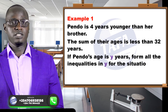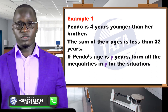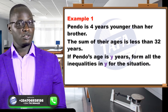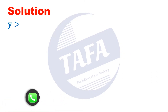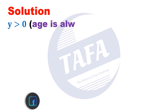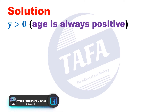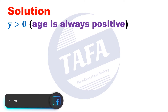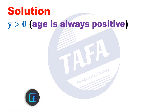The solution: we must first establish that y is greater than zero, because Pendo and her brother cannot have zero years — their age is definitely greater than zero. So y > 0 is our first inequality.